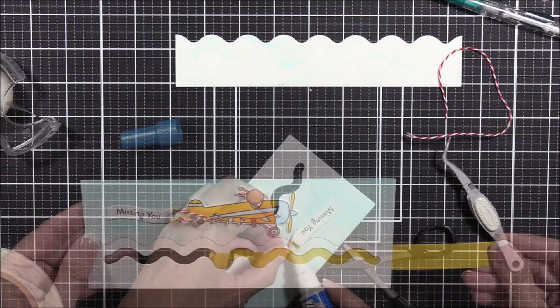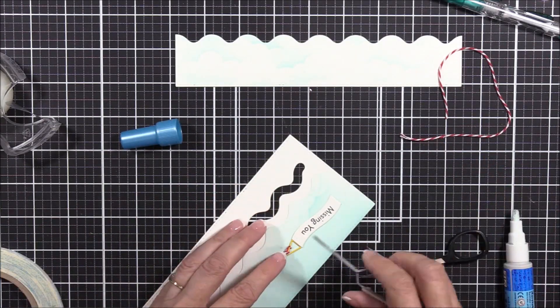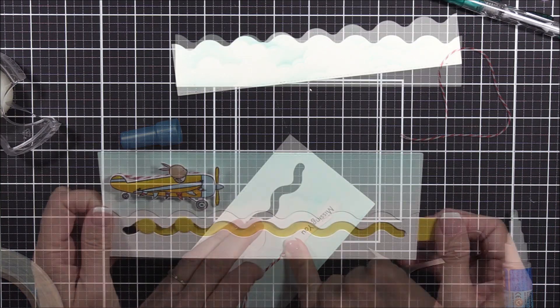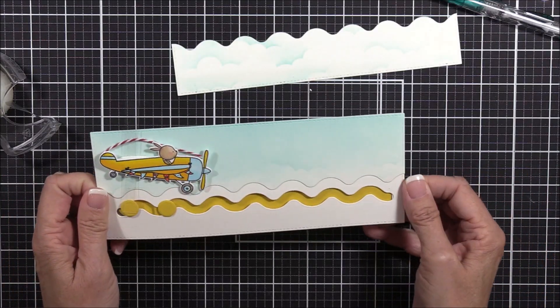And here, ladies and gentlemen, is when I discovered that the banner tab was interfering with the movement of the airplane. So I'm applying more liquid glue to the tab and pressing it down firmly to keep it from getting caught in the plane's tail.